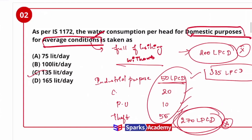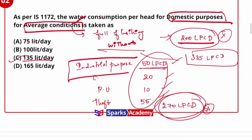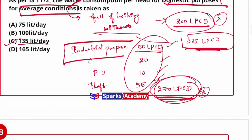To summarize water consumption: for average condition without full flushing it is 135 liters per day, with full flushing it is 200 liters per day. For industrial and commercial purposes additional values apply. The total combined value is 335, and these two key values — 135 and 200 — are very important.